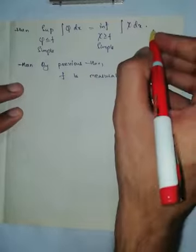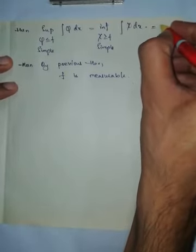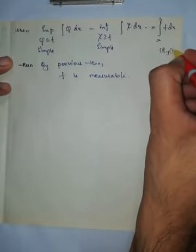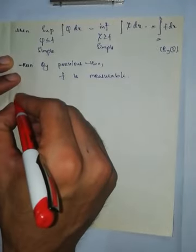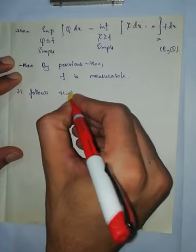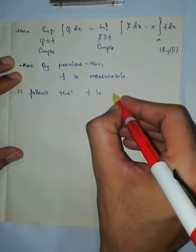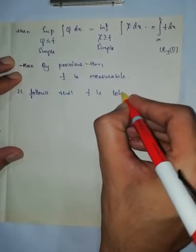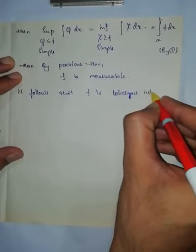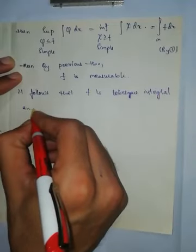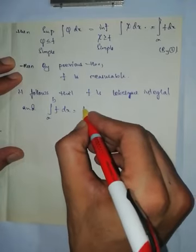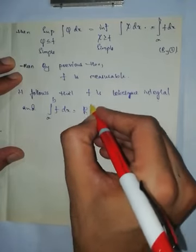Since all terms are equal, we also get that the Lebesgue integral from a to b of f dx equals the Riemann integral from a to b of f dx. Therefore it follows that f is Lebesgue integrable and the Lebesgue integral from a to b of f dx equals the Riemann integral from a to b of f dx.